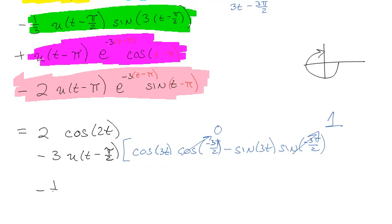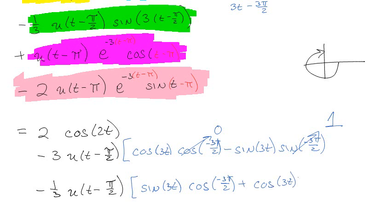All right, then I've got minus 1/3 u(t - π/2). I'm going to apply my sines and cosines. All right, so, this is still the same thing. 3t - 3π/2. So, I've got sine of 3t cosine of -3π/2 plus now cosine 3t sine -3π/2. And that's still 1. And that's still 0. All right, green stuff done.